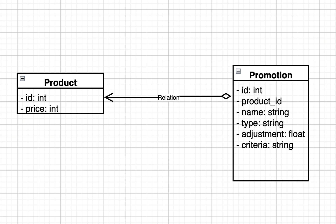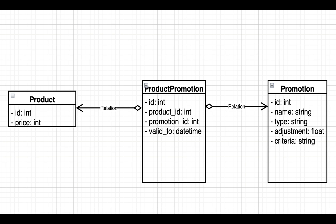Now let's have a look at a diagram of the schema itself. Initially you might think of something like this: we have our product and then our promotion in a many-to-one relationship - many promotions to one product. But if you think about this design, it means the promotion would have to have a product ID on it, which would mean this promotion can only ever apply to a single product. But that's not what we want - we want promotions which can apply to different products.